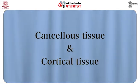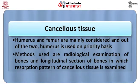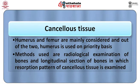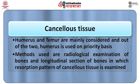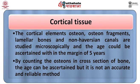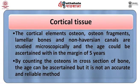Regarding age changes in the internal bony structure, two structural components are studied: cancellous tissue and cortical tissue. For cancellous tissue, the humerus and femur are mainly considered, with the humerus used on a priority basis. The methods used are radiological examination and longitudinal section of bones to examine the resorption pattern of cancellous tissue. The proximal end of the medullary cavity of the humerus assumes a cone shape, the tip of which gradually reaches the surgical neck between 40 to 50 years, and further ascends to the epiphysial line by 60 to 75 years. For cortical tissue, the elements studied are osteons, osteon fragments, lamellar bone, and non-Haversian canals. These are studied microscopically and age can be ascertained within a margin of 5 years, though counting osteons in cross-section is not considered an accurate and reliable method.